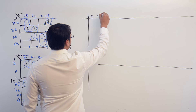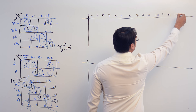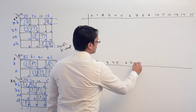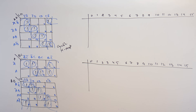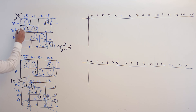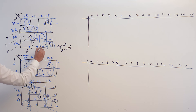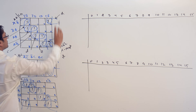We can have minterms 0, 1, 2, 3, 4, 5, 6, 7, 8, 9, 10, 11, 12, 13, 14, and 15 listed across the chart. To save time, instead of writing exact subcube values, we will name the subcubes: this one is small a, this one is small b, this one is small c, this one is small d, this one is small e, this one is small f, this one is small g, and this one is small h.